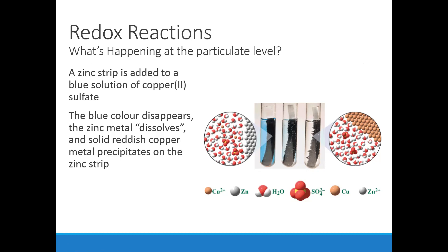If you think about it from the particulate level, from the atomic level, and you think about collision theory back to our kinetics unit, maybe even a little bit of liquids and solids from grade 11 chemistry — the zinc metal, the strip of zinc, is solid and it's a metal. Metals have a crystal lattice structure. All the gray spheres in this enlarged circle are in a crystal lattice structure; that's the zinc metal strip. Those zinc atoms are fixed in place — they're stuck in the solid metal, so they can't move.